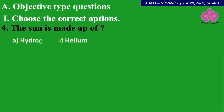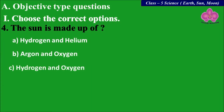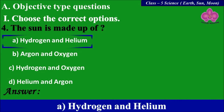Question number four: the Sun is made up of what? Option A: Hydrogen and helium, B: Argon and oxygen, C: Hydrogen and oxygen, D: Helium and argon. The Sun is mainly made up of hydrogen and helium — that is A.